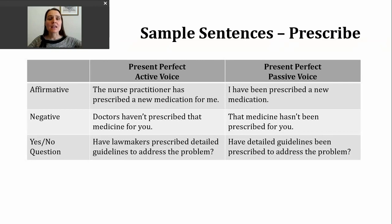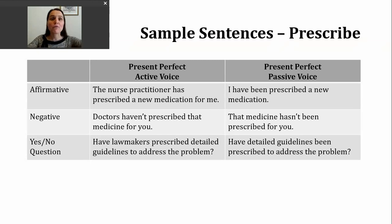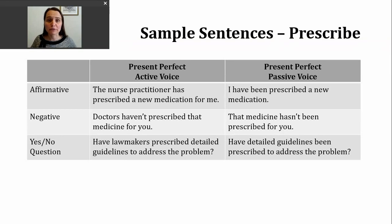In the passive voice, the structure for present perfect is, again, to start with have or has, then use the participle been — B-E-E-N — and then the participle form of our verb. To change the first example to passive voice: I have been prescribed a new medication. Again, we don't know who's responsible for that action, and it might not matter. If you don't know my doctor or my nurse practitioner, you don't really care if I include them in that sentence.